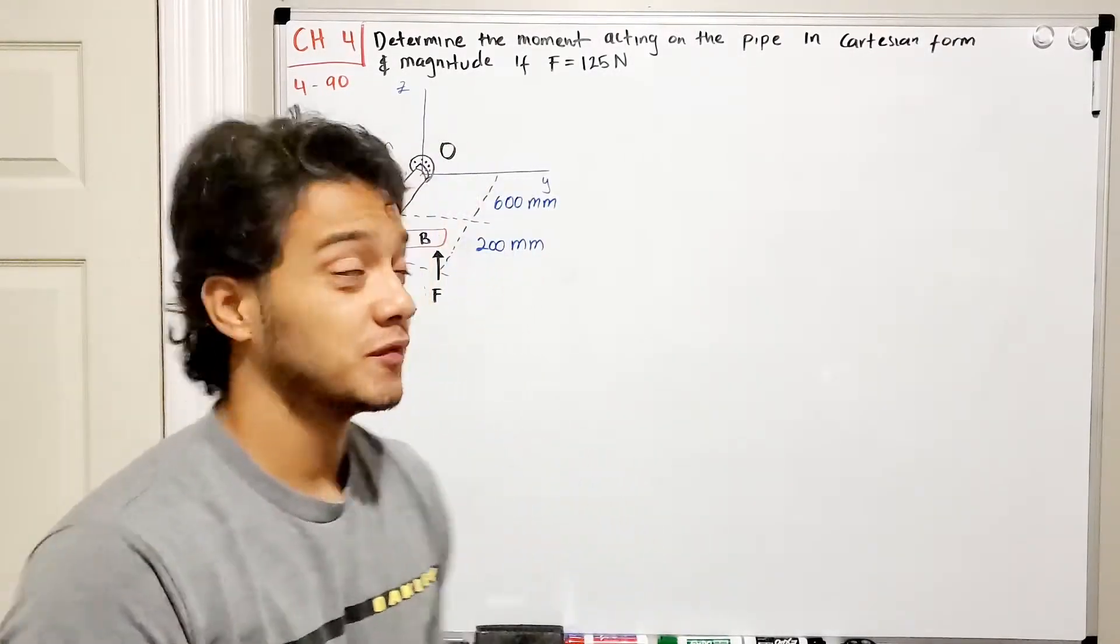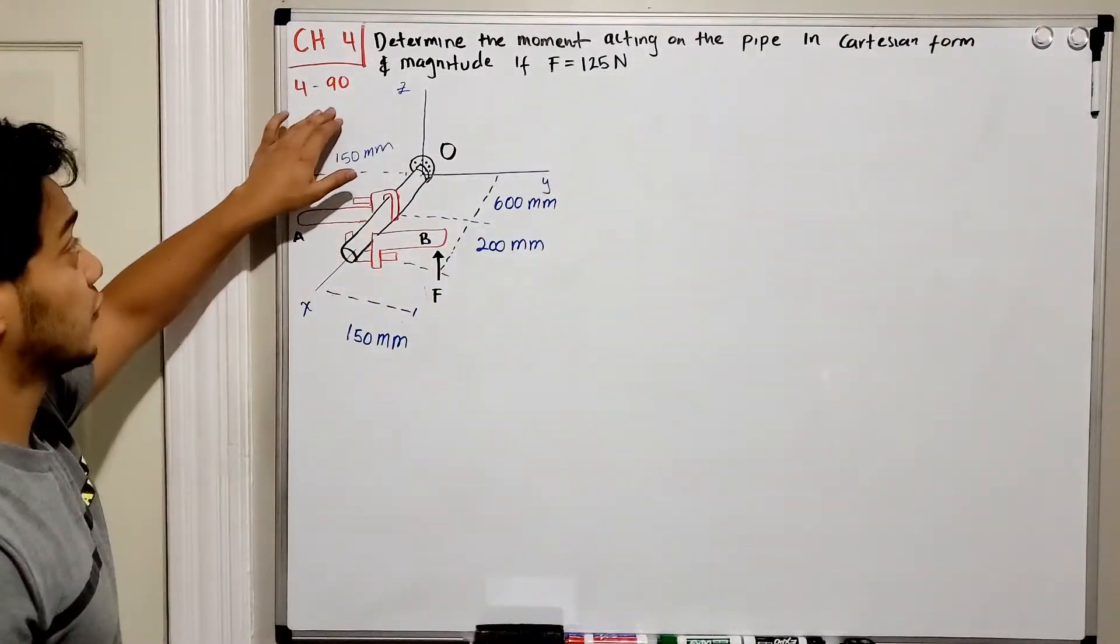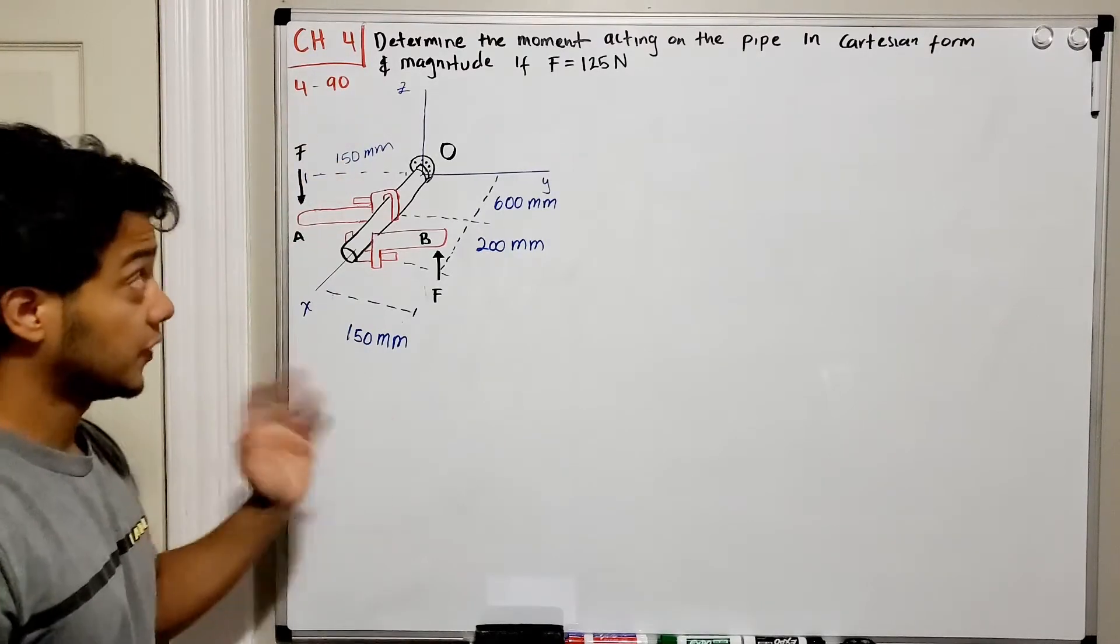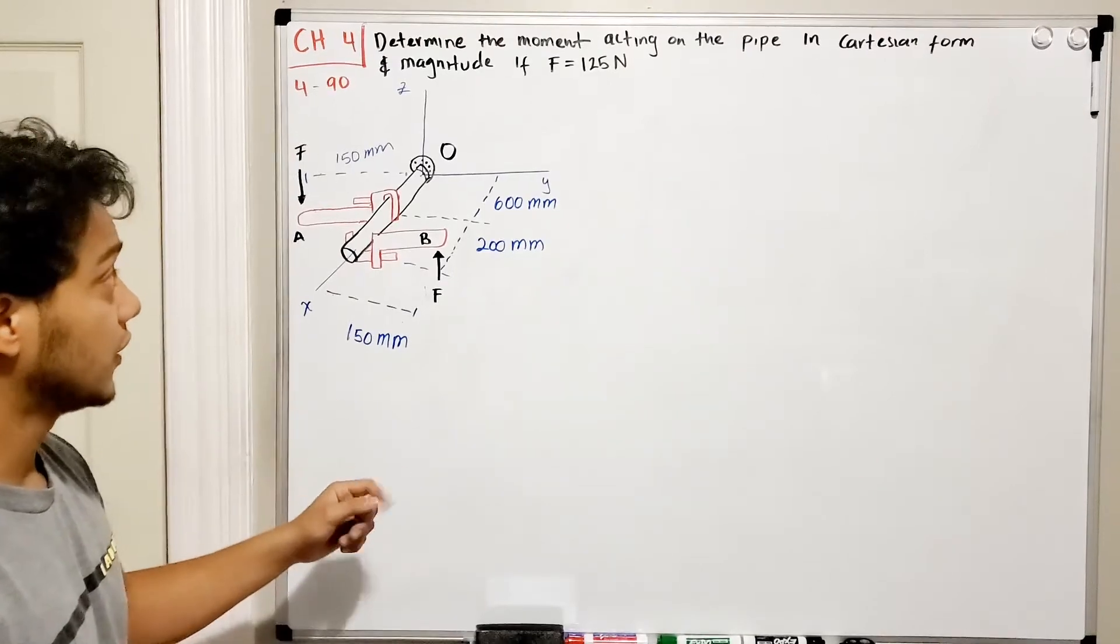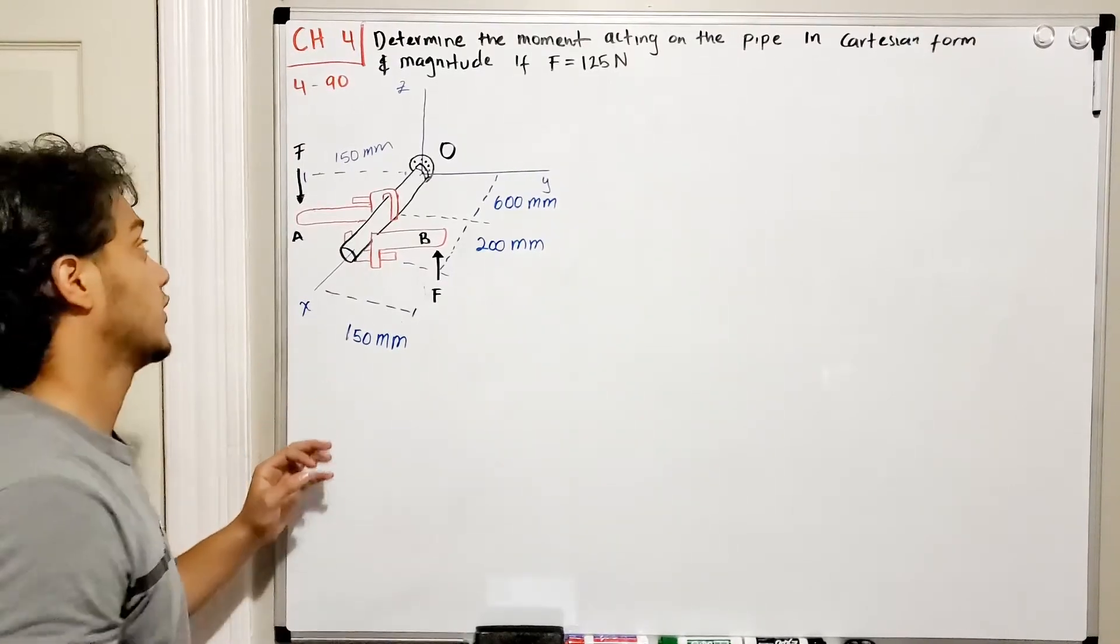Welcome back everyone to learning by teaching. We're in statics and we're going to do problem 4.90. It says determine the moment acting on the pipe in Cartesian form and also the magnitude if F is equal to 125 Newton.